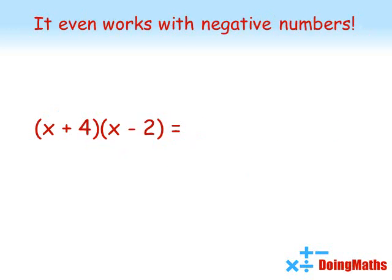Now the same thing works even if there are negative numbers in there. In this example we've got X plus 4 times X minus 2. So again we'll take the first X, multiply it by the X in the second bracket to give us X squared. Then we're going to take the X times by the negative 2 giving us minus 2X. 4 times X is 4X and 4 times by negative 2 is minus 8.